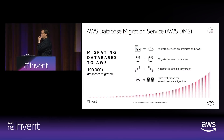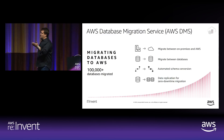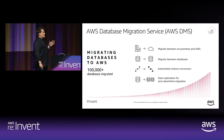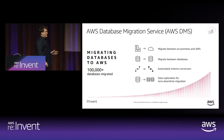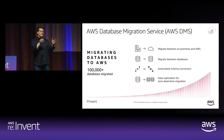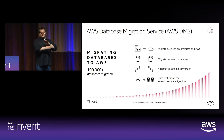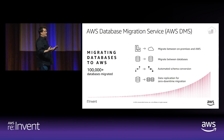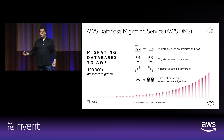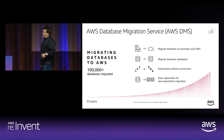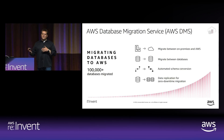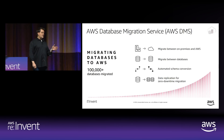Another thing many customers benefit from in the lift-and-shift category is using tools like DMS. DMS is an excellent tool, and I've seen big enterprises take full advantage of it. These tools are getting better and smarter every day — I often think of them like having an army of consultants by your side in the form of software. If you're looking to move from SQL Server, Oracle, MySQL, or MongoDB into AWS, I'd encourage you to check out DMS. It saves people a lot of time and money.